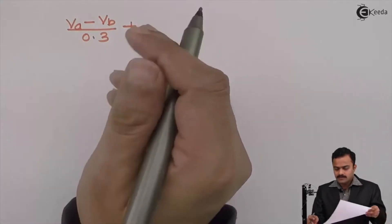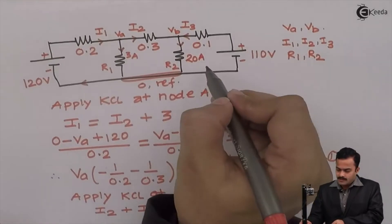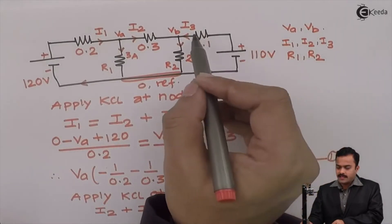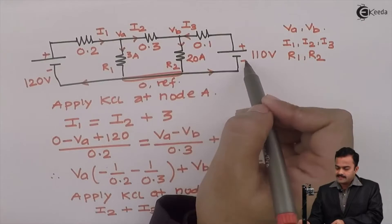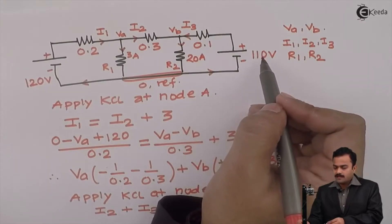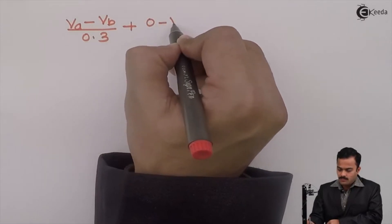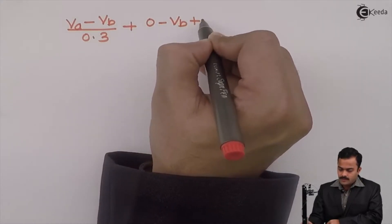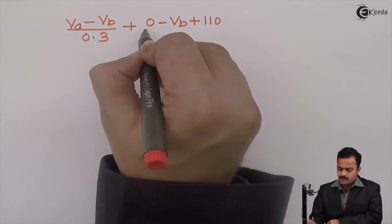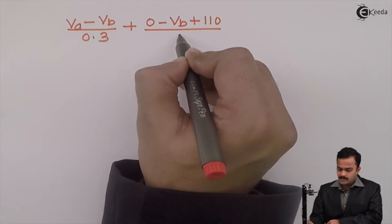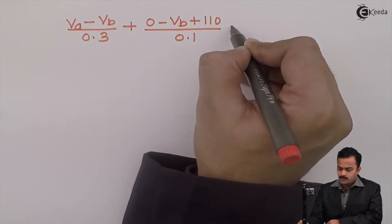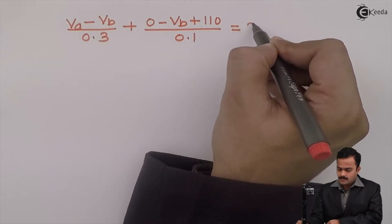Now, this current I3 has started from reference and ending on B point. And in the direction, I am having a voltage rise of 110V. So, the equation will be 0 minus Vb plus 110 divided by resistance of this branch which is 0.1 equals 20.